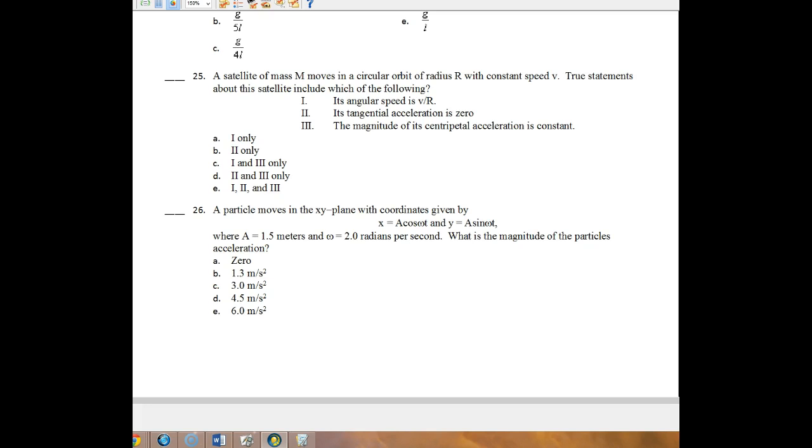All right, hey, this is Horner. We're going to look at number 25 through number 30 for the AP Physics C pre-test questions for rotational motion. So you have a satellite of mass M moving into circular orbit with radius R and a constant speed V. True statements about the satellite include which of the following.